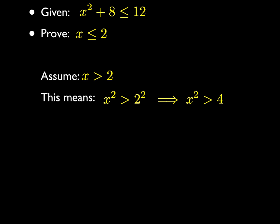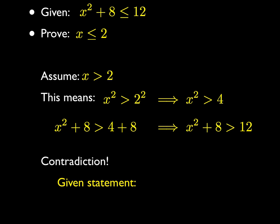If we add 8 to both sides, that means x squared plus 8 has to be greater than 12, and that's our contradiction. That contradicts the given statement that x squared plus 8 is less than or equal to 12. Therefore, x must be less than or equal to 2.